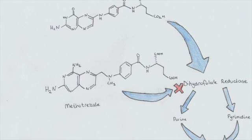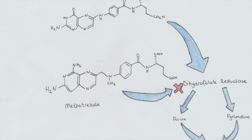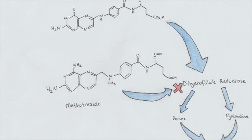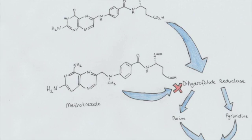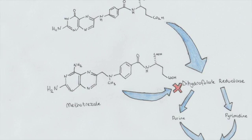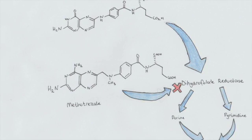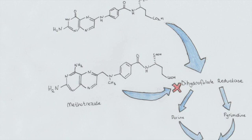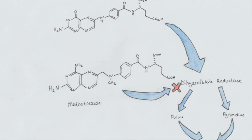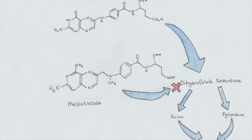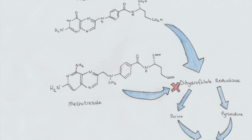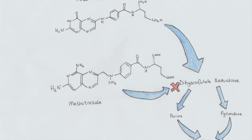Methotrexate is a synthetic analogue of folic acid, and it competes with folic acid for binding to the enzyme dihydrofolate reductase. When it binds, it inhibits this enzyme. This inhibition interferes with DNA synthesis by reducing the amount of purine and pyrimidine supply in rapidly dividing cells.